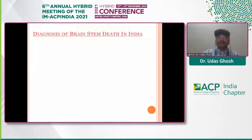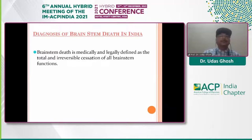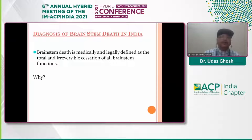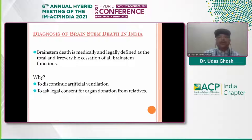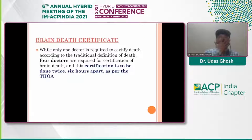How do you diagnose brain stem death in India? Brain stem death is medically and legally defined as the total and irreversible cessation of all brain stem function. It is important to discontinue artificial ventilation — you can tell the patient's family the patient has developed brain death and there is no need to continue artificial ventilation. You can also ask the family for legal consent for organ donation. That is why the diagnosis of brain stem death is essential.